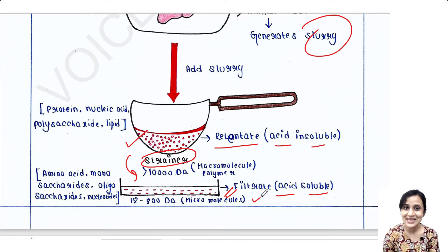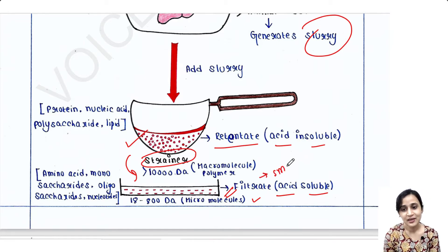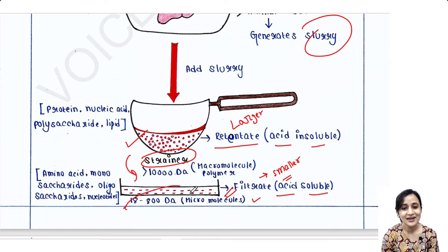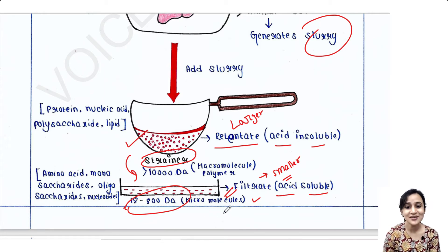The components which are acid soluble are always smaller — they are smaller components. The components which are not soluble are larger in size. Smaller means the molecular weight of them ranges from 18 to 800 dalton. All components which are acid soluble and have a molecular weight between 18 to 800 dalton are called micromolecules because they are smaller in size.